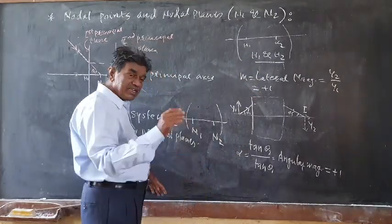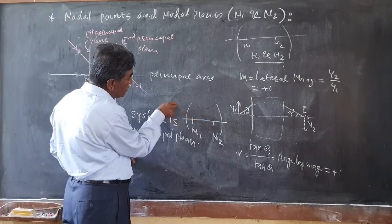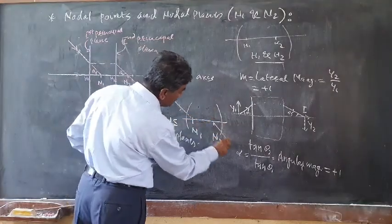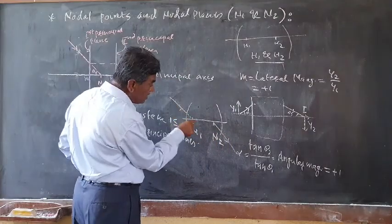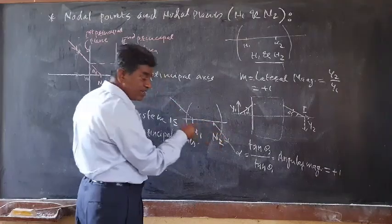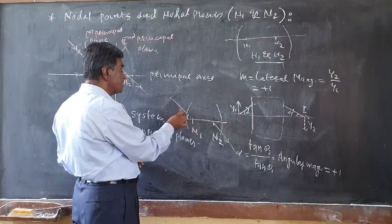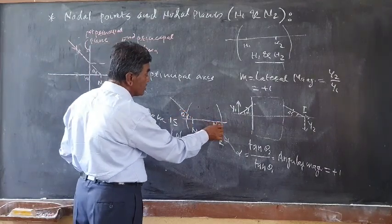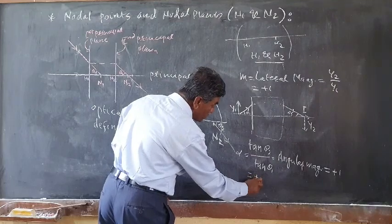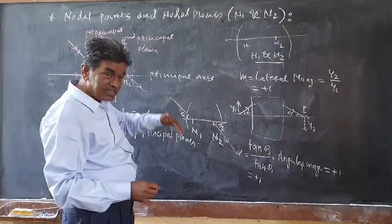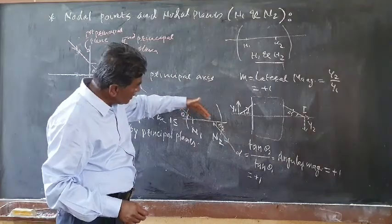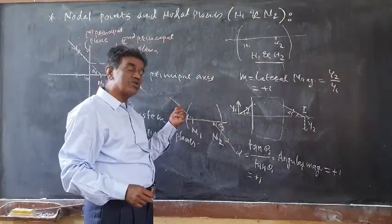It means: if a ray of light is directed towards one nodal point, it will emerge from the second nodal point in a direction parallel to the incident ray. The incident ray and the refracted ray are parallel, so angle theta one equals angle theta two, and tan(theta two) divided by tan(theta one) equals plus one in case of N1 and N2.